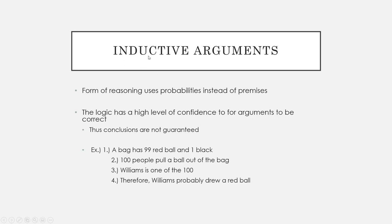An inductive argument, as opposed to a deductive argument, uses probabilities instead of premises. The logic has a high level of confidence for arguments to be correct, but our conclusions are not guaranteed. For example: a bag has 99 red balls and one black ball; a hundred people pull a ball out of the bag; Williams is one of the hundred — therefore Williams probably drew a red ball. The probability is very high at 99%, but it's not a guarantee because there is a chance the one black ball could have been pulled by Williams.